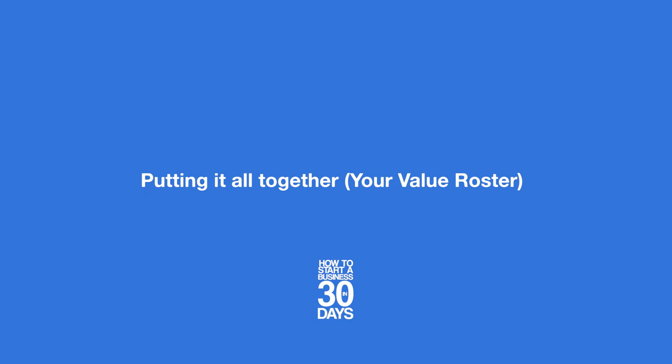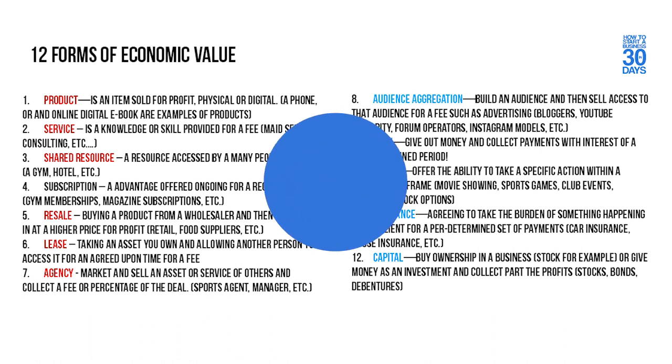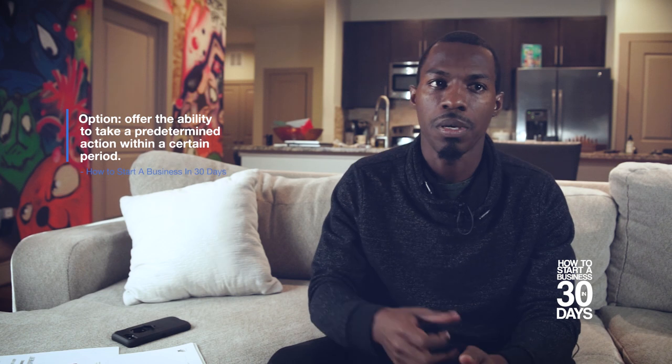So how do we tie all 12 economic forms of value together? We use what's called a value roster. Let's put these 12 forms on screen and walk through an example. Say you're a fitness instructor starting your business in the next 30 days — all you have to do is look long term at how you can develop different forms of value in each section. You might start out by giving a workout class, which could be classified as either a product or an option — people have an option to come to your course.